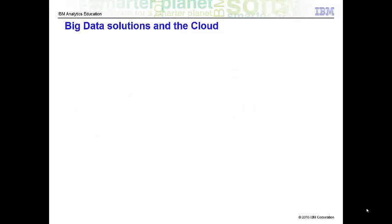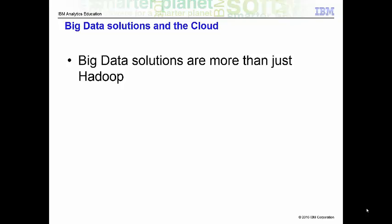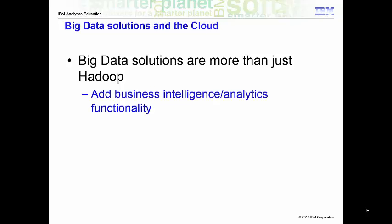Let's move on and talk about big data solutions. Big data solutions are more than just Hadoop. They can integrate analytic solutions through the mix to derive valuable information that can combine structured legacy data with new unstructured data. Big data solutions may also be used to derive information from data in motion. For example, IBM has a product called InfoSphere Streams that can be used to quickly determine customer sentiment for a new product based on Facebook or Twitter comments.